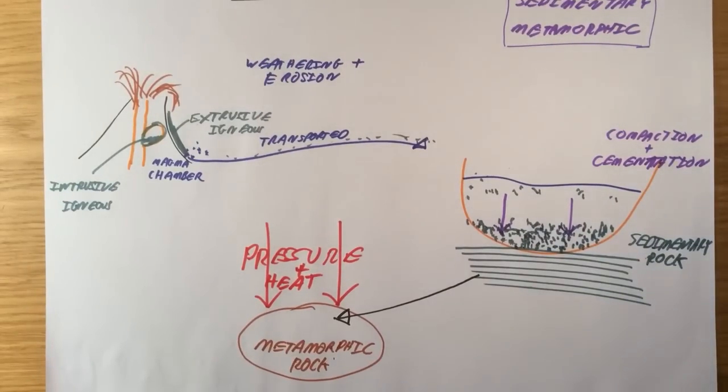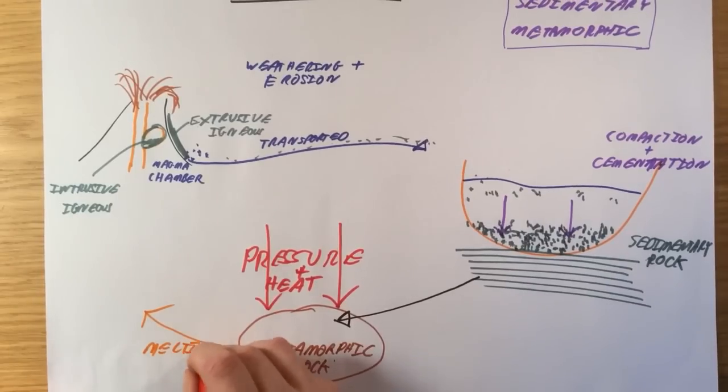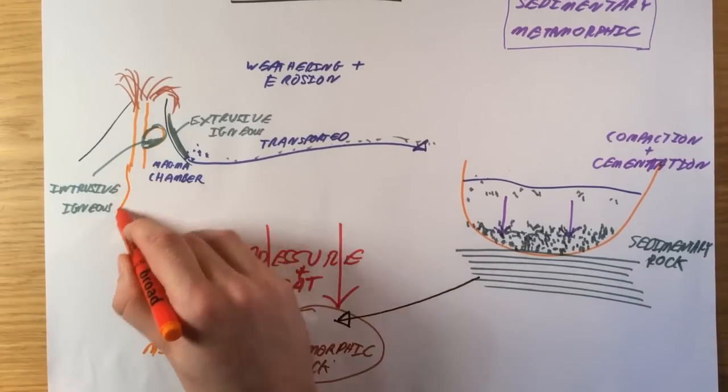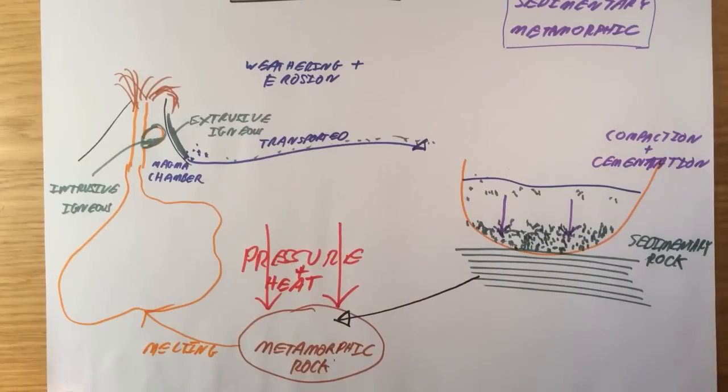If our metamorphic rock gets buried even deeper and there is even more pressure and even more heat, eventually, this rock will melt. And when it does, it will turn back into magma.